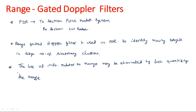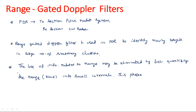We divide the incoming range or time into small intervals. Depending upon which interval the return falls in, that corresponding range gate is opened. This process of dividing the range into a number of small time intervals is called range gating.